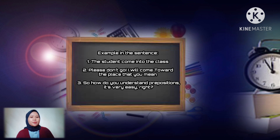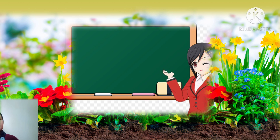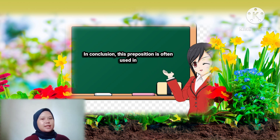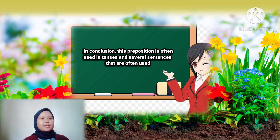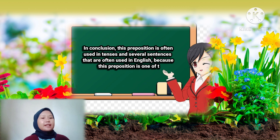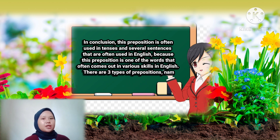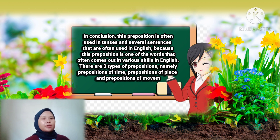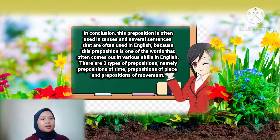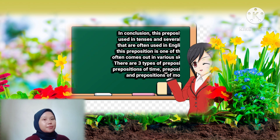So, how do you understand prepositions? It's very easy, right? In conclusion, prepositions are often used in tenses and sentences in English, as they are one of the words that frequently appear in various English skills. There are three types of preposition: namely, preposition of time, preposition of place, and preposition of movement.